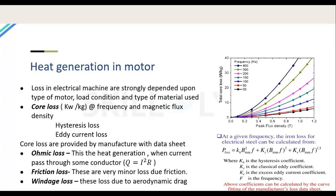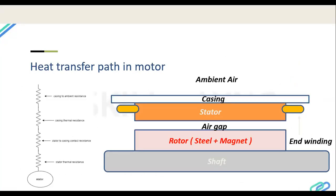To avoid eddy current losses, motors are built with lamination stacks of steel material with very small thickness — typically 0.35 mm. Reducing the lamination thickness reduces eddy current losses. This is why motors are never solid blocks — they are made of stacks to reduce eddy current losses.